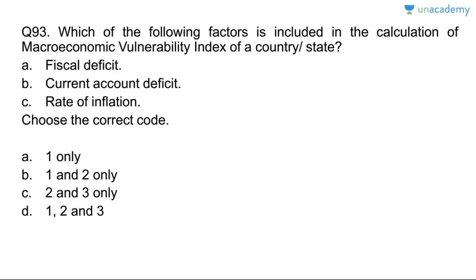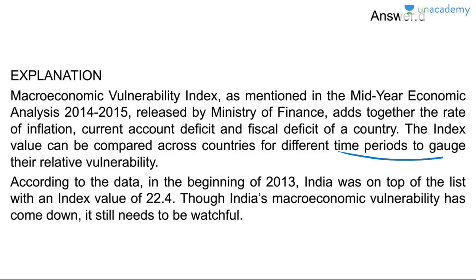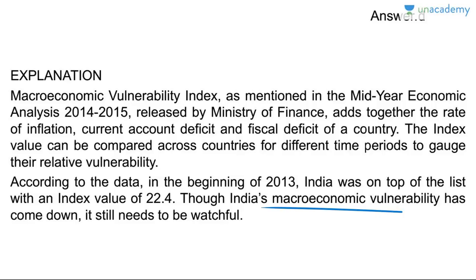Question ninety-three: which factors are included in the calculation of the Macroeconomic Vulnerability Index? Fiscal deficit, current account deficit, and rate of inflation — all three. Answer is D. The Macroeconomic Vulnerability Index, as mentioned in the mid-year economic analysis of 2014–15, adds together the rate of inflation, current account deficit, and fiscal deficit. The index can be compared across countries; at the beginning of 2013, India topped the list with a value of 22.4.